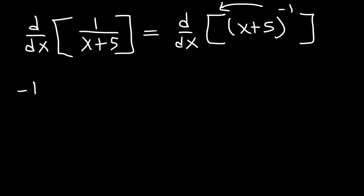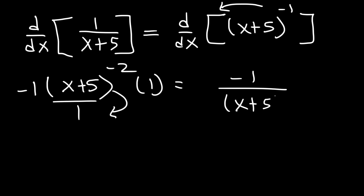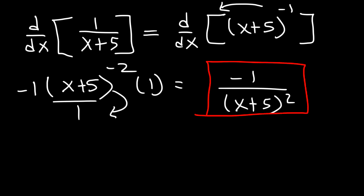Using the power rule, take the exponent and move it to the front: negative 1. Keep the inside the same and subtract the exponent by 1 — that's negative 2. Then multiply by the derivative of the inside function. The derivative of x plus 5 is 1. Bringing this back to the bottom, the final answer is negative 1 over x plus 5 squared.